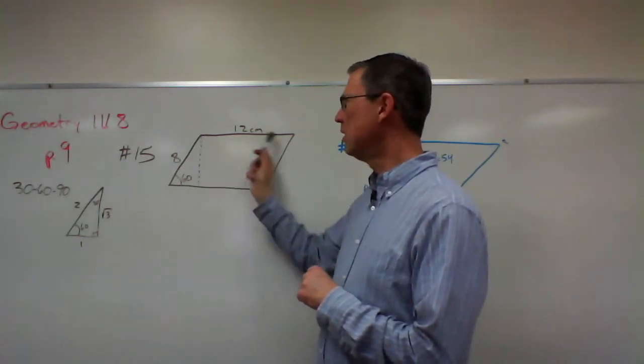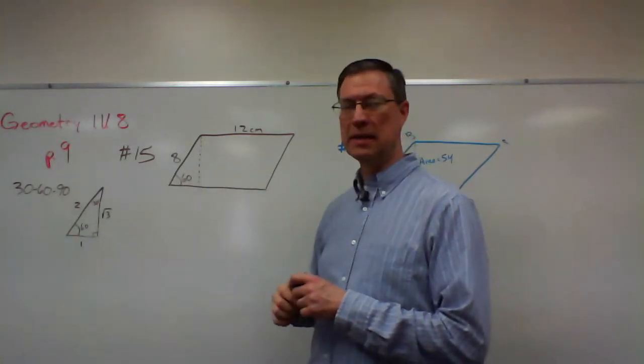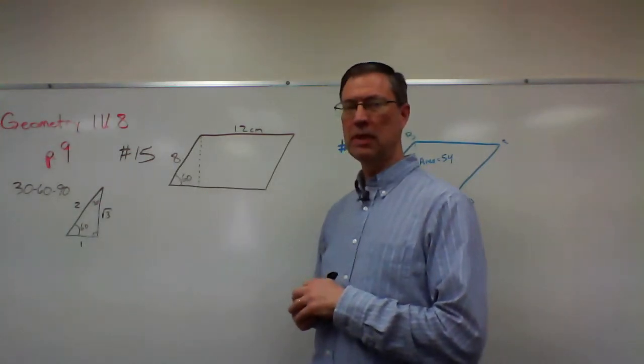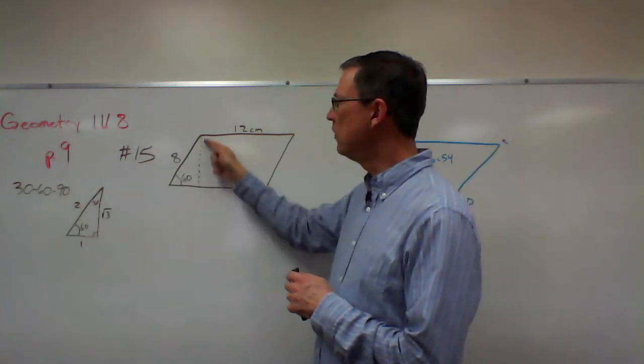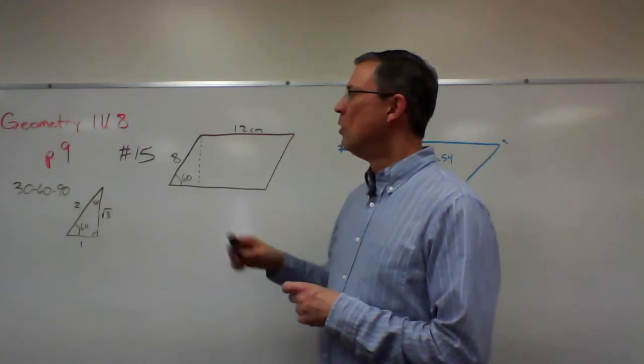So we know that the length is 12, the other side is 8, and then they give us the angle is 60 degrees. Now before we can find the area of 15, I need to figure out what the height is.